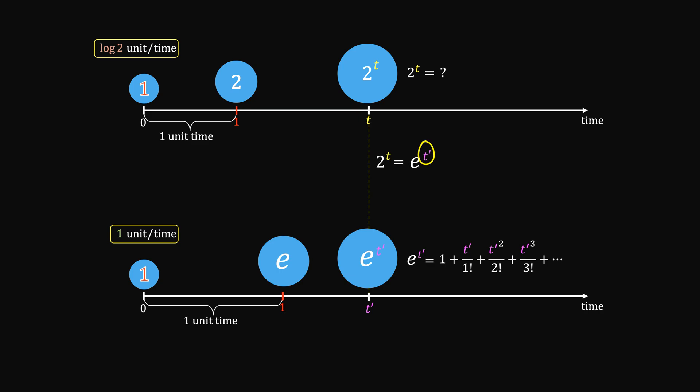All we need is to figure out what this t prime is. No matter how you define the time unit, the number of units produced by the starting unit during this period should be the same under both systems.